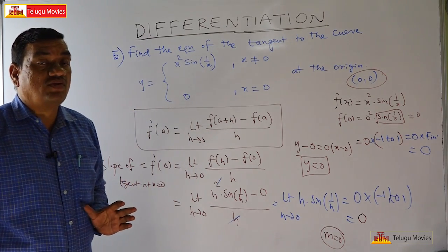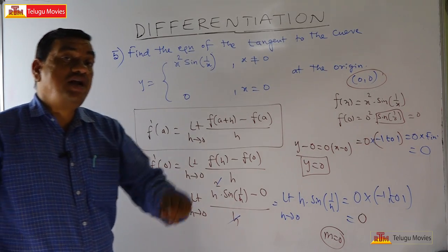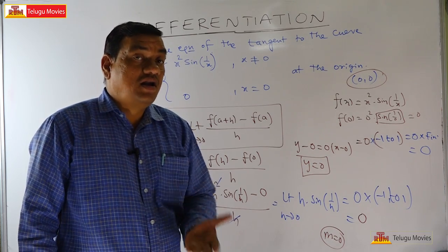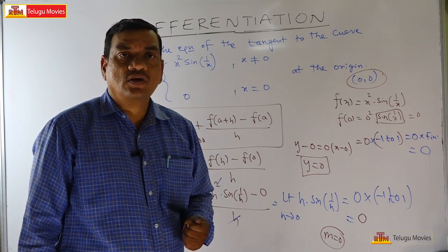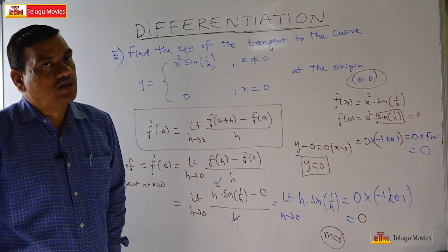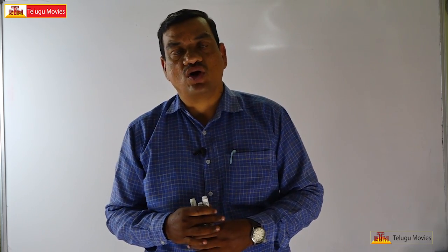The key lesson from this problem: always check whether the function is continuous at the given point before finding the tangent. If the function is discontinuous at that point, no tangent exists, and the answer would be 'none of the above'. I hope you enjoyed today's class. All the best.